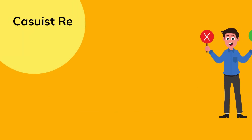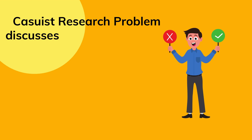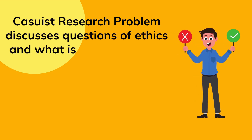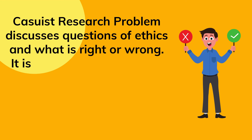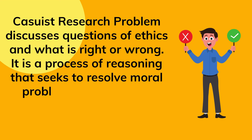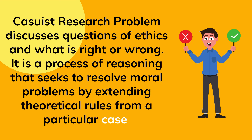The casuist research problem discusses questions of ethics and what is right or wrong. It is a process of reasoning that seeks to resolve moral problems by extending theoretical rules from a particular case. When we have questions of right or wrong, or research on ethics, we use this method.